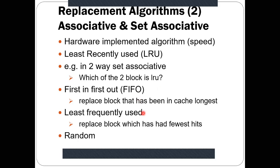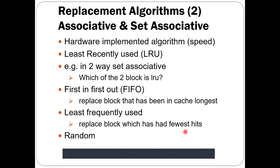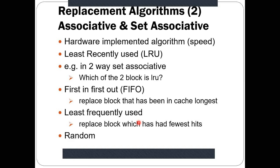Another algorithm is Least Frequently Used. LFU says: replace that block which has had the fewest hits. To implement this, we maintain a counter with each cache line. The counter gets incremented when a line is referenced. The line with the lowest counter value is replaced first, since it has not been referenced frequently in the past.